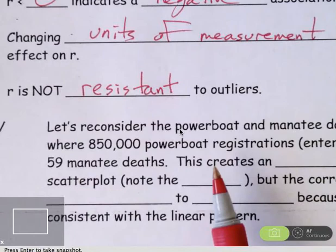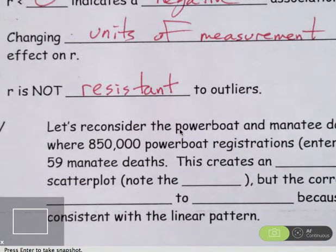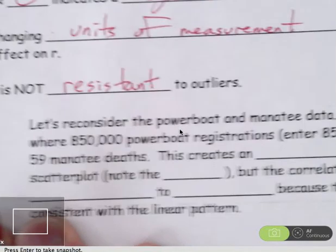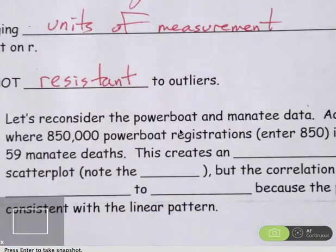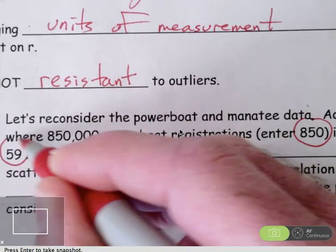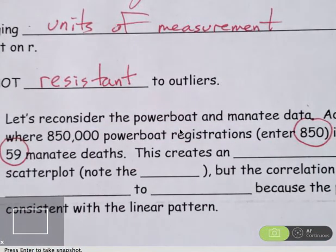So let's reconsider the manatee and powerboat data, and we're going to enter an observation where there are 850,000 powerboat registrations. So for that we are going to enter an 850 into the explanatory variable list, and we are going to associate that with 59 manatee deaths. We will put that into the response variable list.